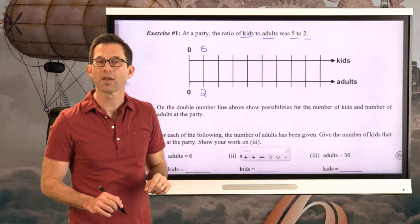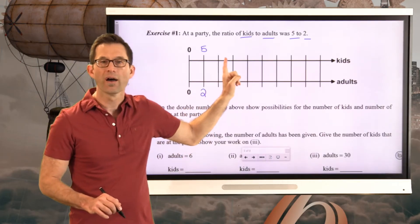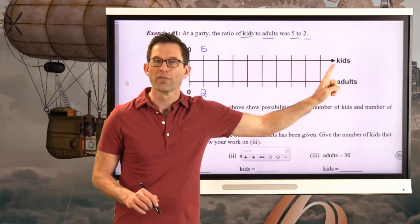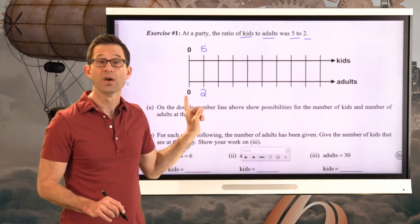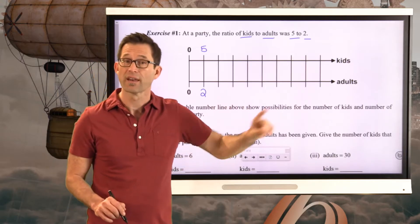The kid number line is going to go in 5s. 0, 5, 10, 15, 20, 25, 30, 35, 40, etc. Whereas the adult number line is going to go by 2s. 0, 2, 4, 6, 8, 10, etc. So we can really kind of fill this in.